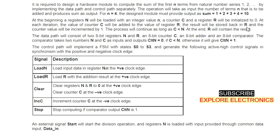The data path consists of two 8-bit registers N and R, an 8-bit counter C, an 8-bit adder, and an 8-bit comparator. The comparator takes N and C as inputs and outputs cltn equal to 0 if C is less than N, otherwise cltn equals 1.